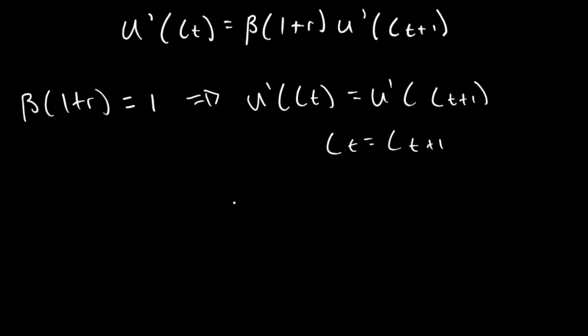Those are the main conclusions we can draw from interpreting the Euler equation in this two-period model — seeing how when we change beta(1+r), consumption over the two periods changes. Those are our main conclusions, and I hope you understood everything. Thank you for watching.